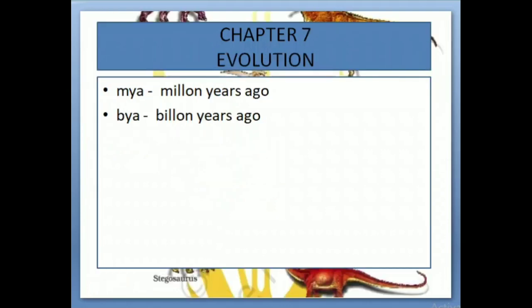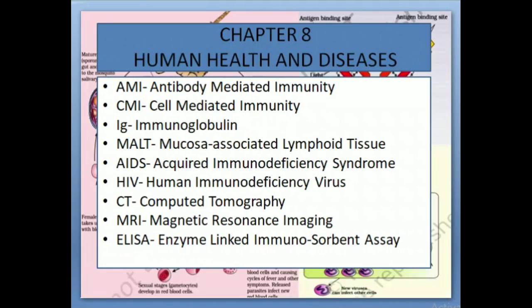Chapter 7: Evolution. MYA: Million Years Ago. BYA: Billion Years Ago. Chapter 8: Human Health and Diseases. AMI: Antibody Mediated Immunity. CMI: Cell Mediated Immunity. Ig: Immunoglobulins.